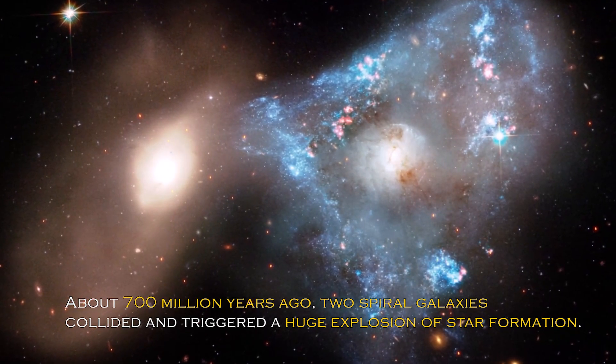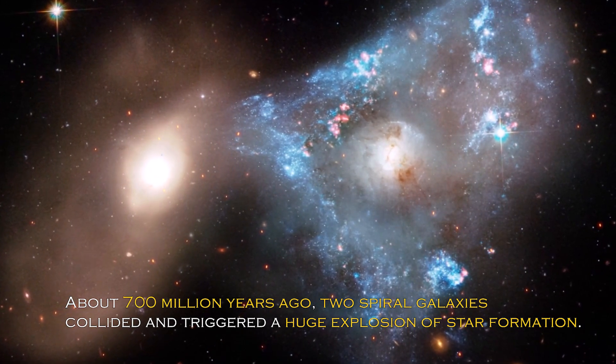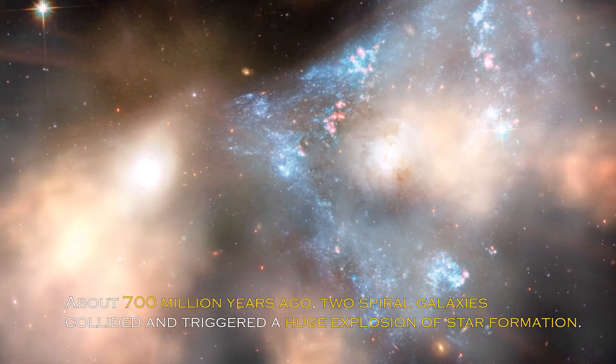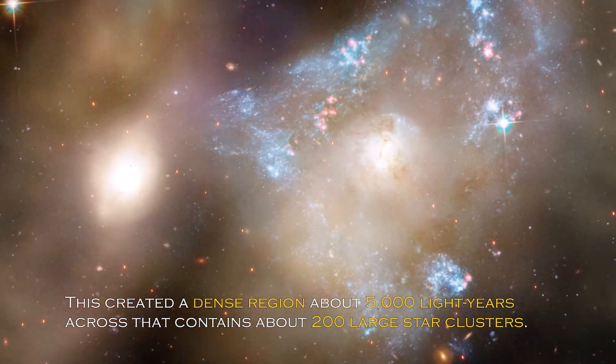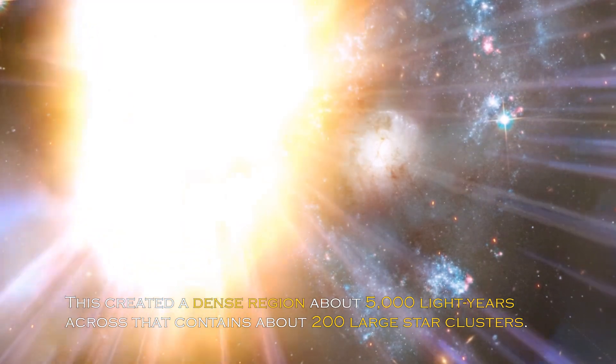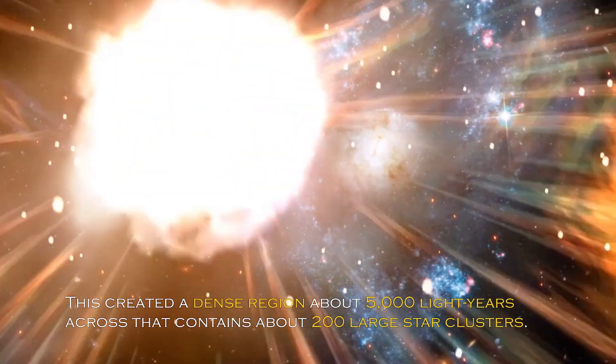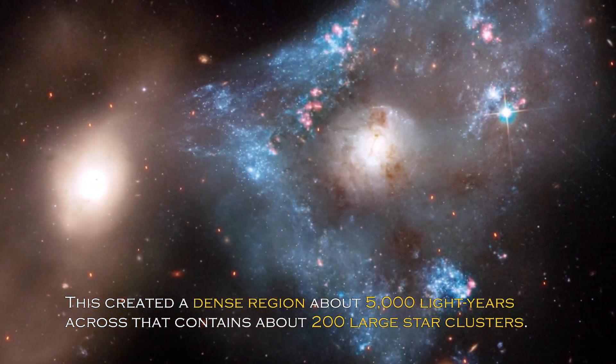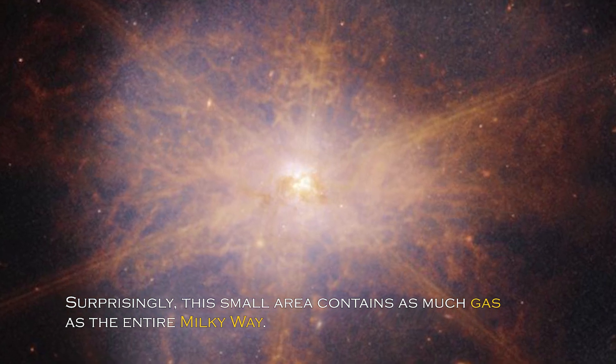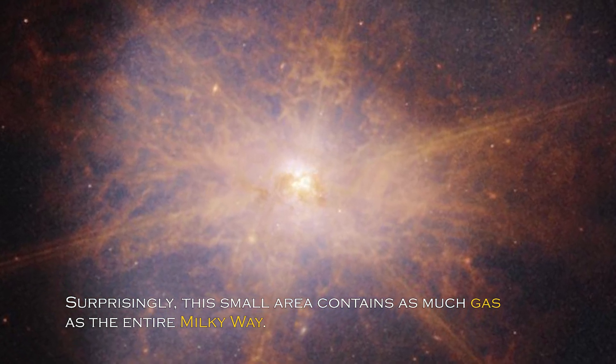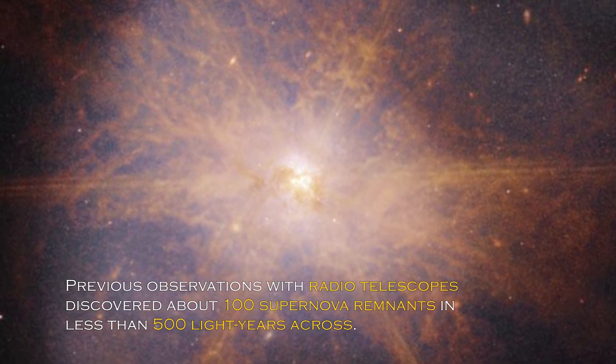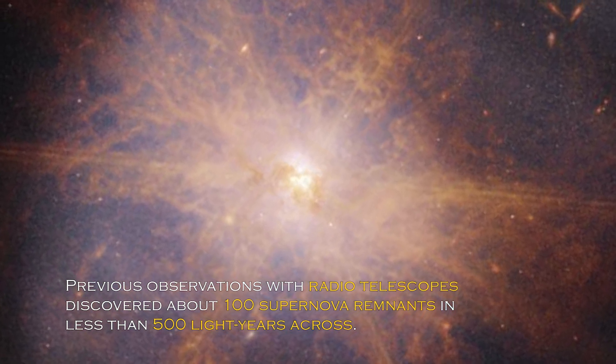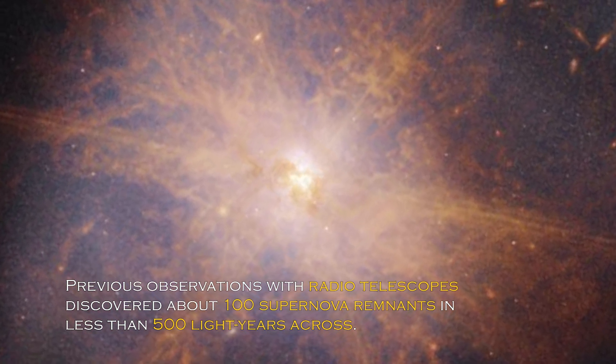About 700 million years ago, two spiral galaxies collided and triggered a huge explosion of star formation. This created a dense region about 5,000 light-years across that contains about 200 large star clusters. Surprisingly, this small area contains as much gas as the entire Milky Way. Previous observations with radio telescopes discovered about 100 supernova remnants in less than 500 light-years across.